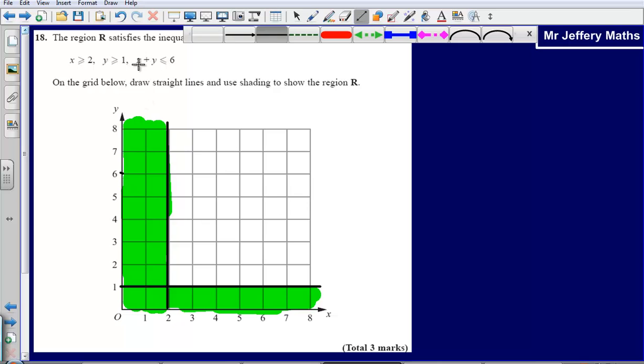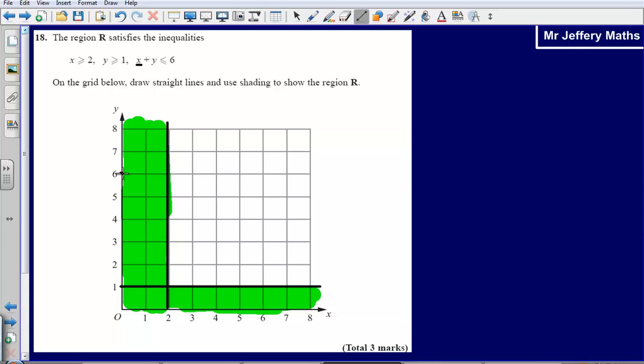So if I imagine, let's imagine first of all that x is equal to 0. If x is equal to 0, that means y has to be equal to 6. So I'm going to draw a point there. If y is equal to 0, that means that x must be 6. So I'm going to have a line going from these two points. And I can check if this is right, just by picking a random coordinate.